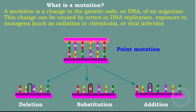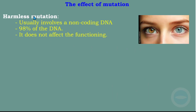The effect of mutation: we have harmless mutation. A harmless mutation usually involves non-coding DNA, which makes about 98% of the DNA, and it does not affect the functioning of the organism. For example, we have a lady here with two different colors of the iris — this condition is called heterochromia. It is a mutation, but it's harmless.